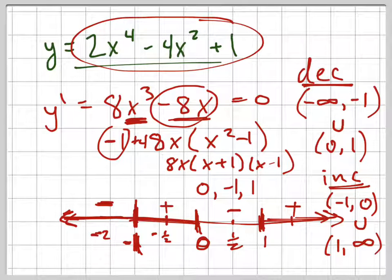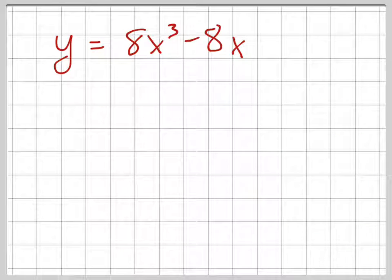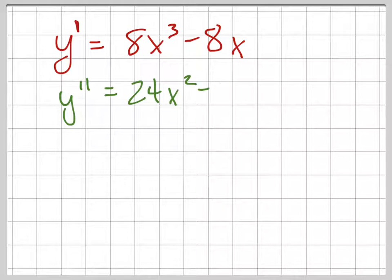So remember they asked us for increasing and decreasing. We just did that. Now they're asking us for concave up and concave down. So to find out where it's concave up and concave down, we're going to take the derivative, which was that function, and we're going to take the derivative again. In other words, we're finding the double derivative, which is just going to equal 24x squared minus 8. And again, we can factor to simplify this a little bit. That's 8 times 3x squared minus 1.